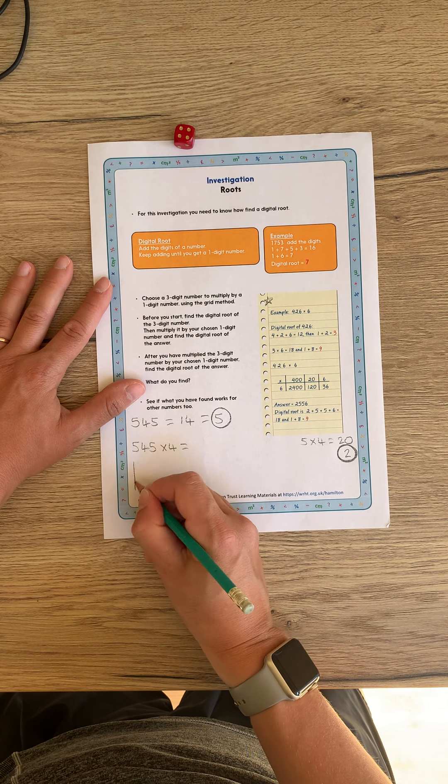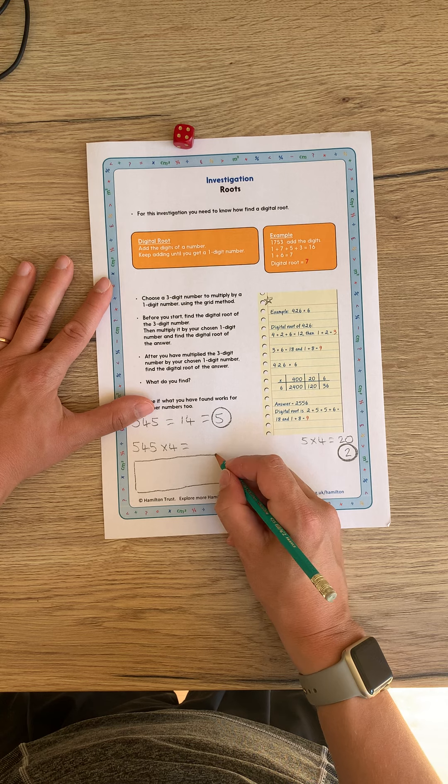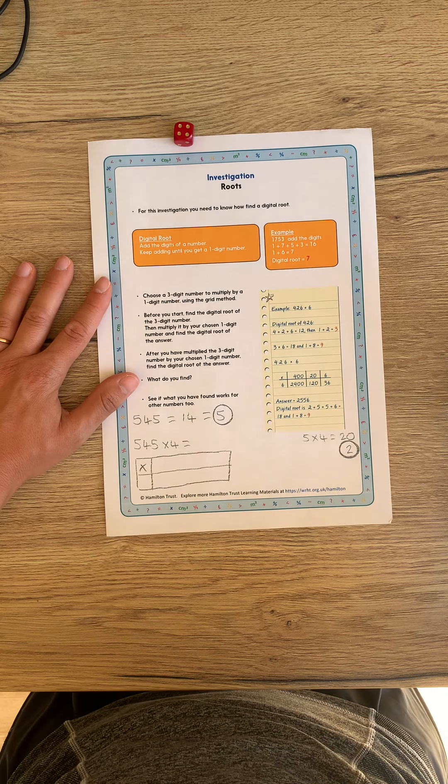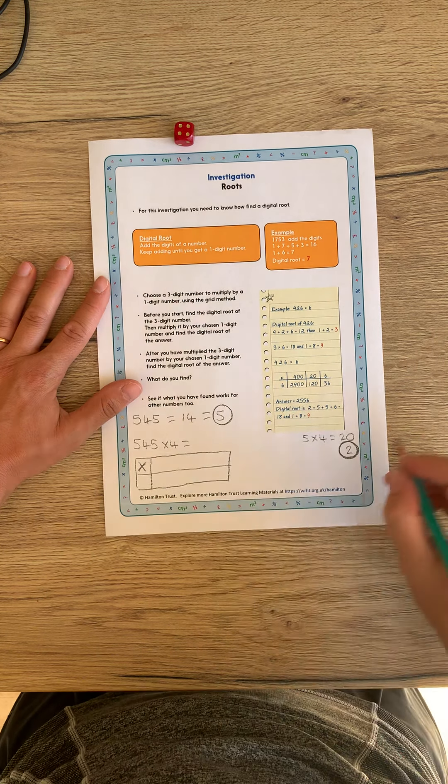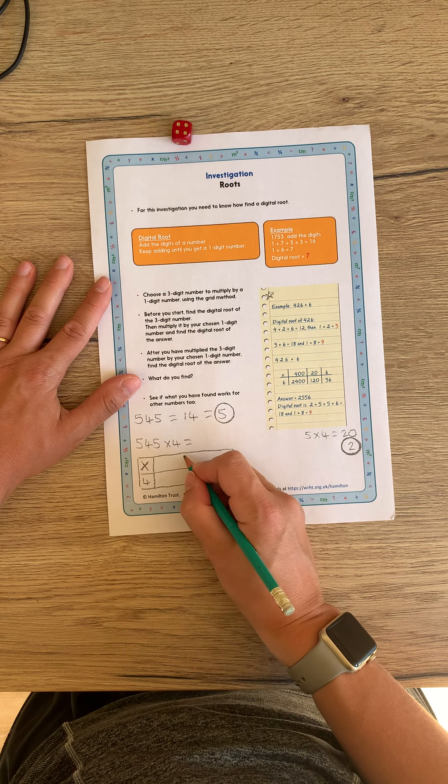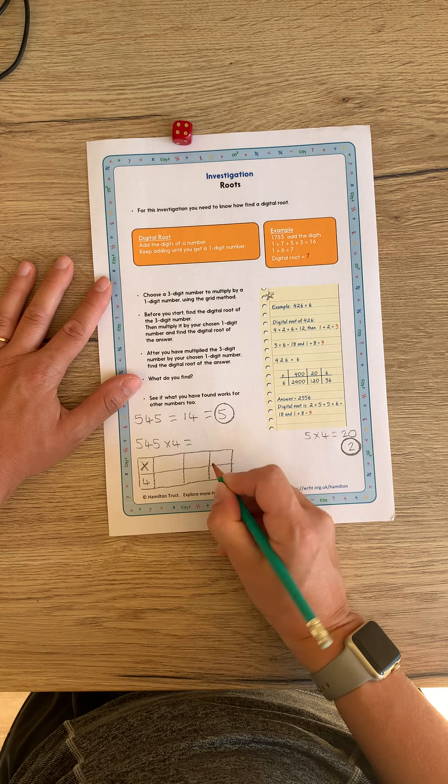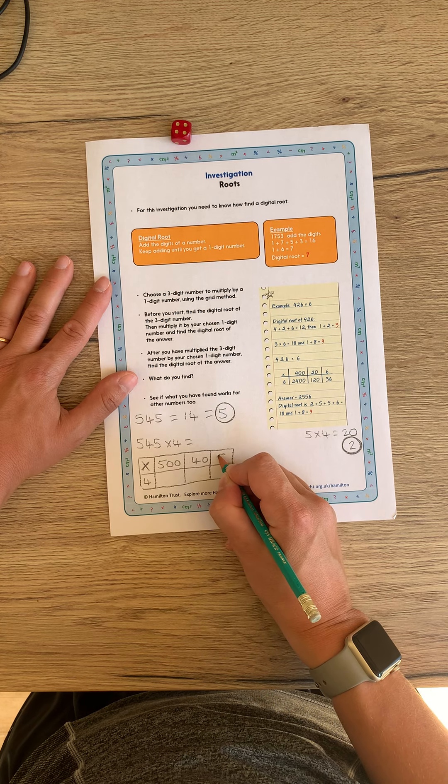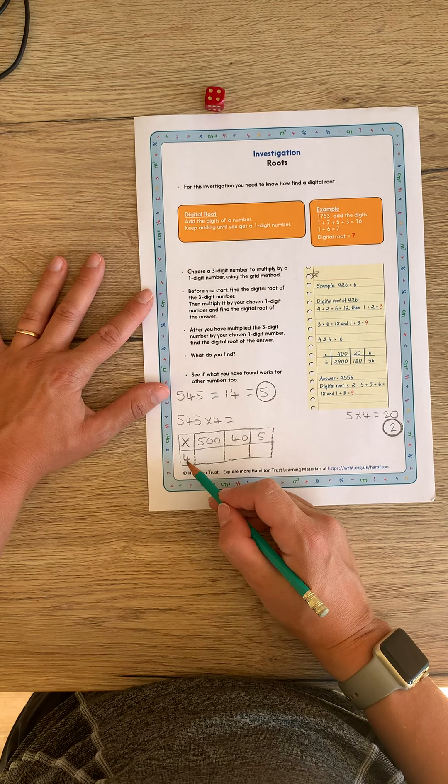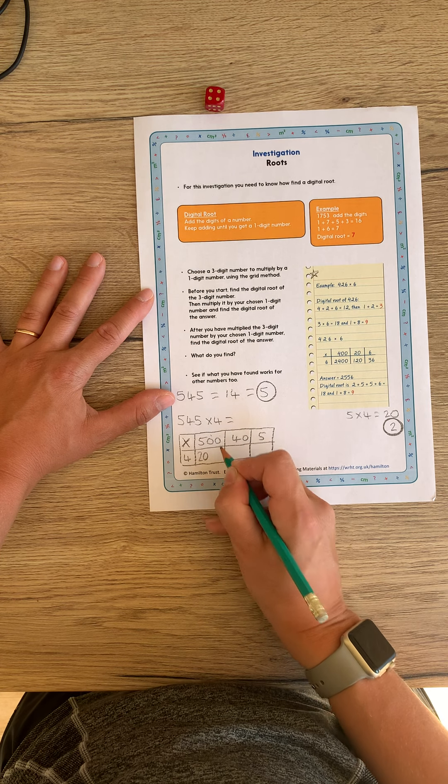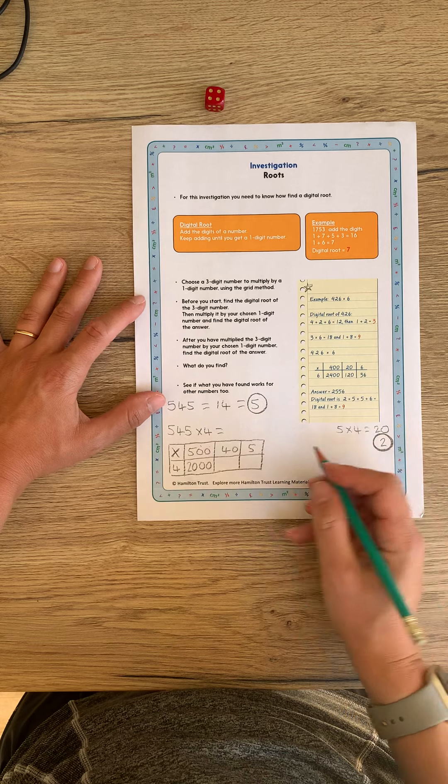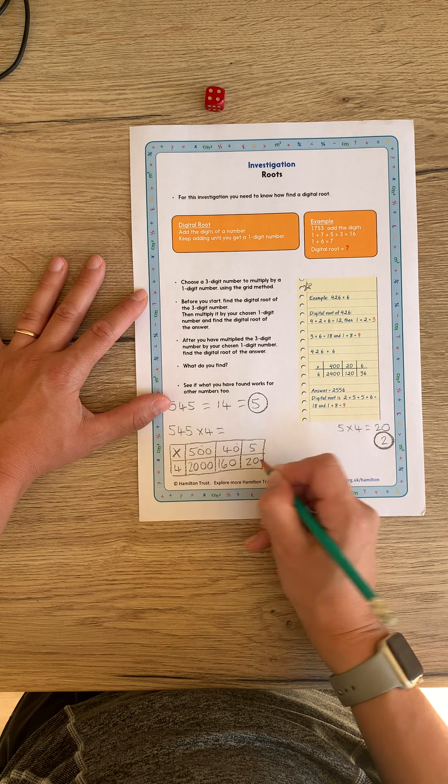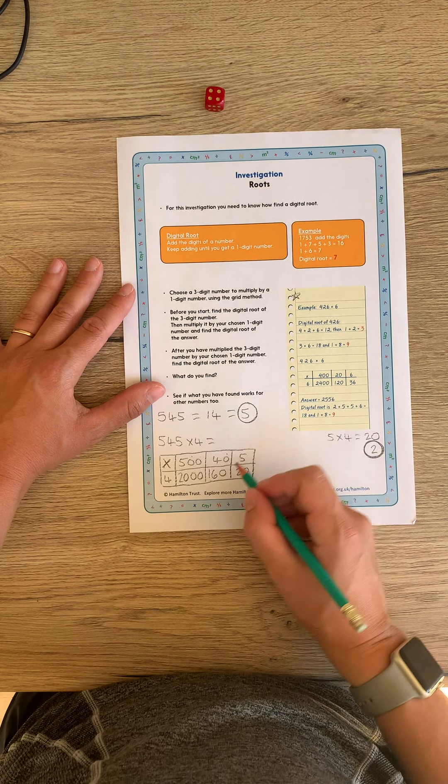545 multiplied by four. Let's make our grid. A little bit wonky. This is the bonus of home learning because I'm not asking you to use rulers like I would in school. Obviously, it's good if you do have a ruler and use it. That is excellent practice. So well done if you are. Here we go. 545 partitioned. 500, 40, and 5. Multiplying all of these by four. So first of all, four multiplied by five is 20. Two place value holders gives us an answer of 2000. Four multiplied by four is 16, one place value holder, 160. Four multiplied by five is 20.